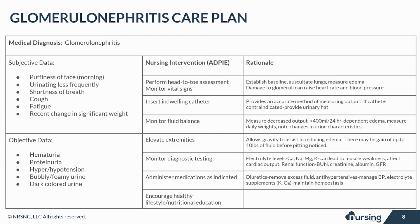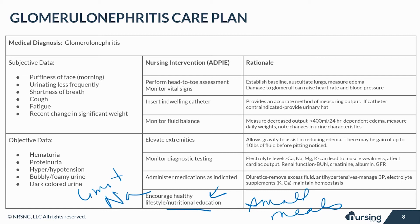Finally, encourage a healthy lifestyle and nutritional education. Offer small and frequent meals. Restrict fluids as necessary. Limit sodium and protein intake. Encourage exercise to maintain a healthy weight. Control blood sugar in diabetic patients. And, of course, encourage smoking cessation.